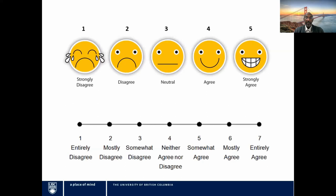Both scales have an odd number of categories, whether five or seven, and they are balanced around a neutral response. In the case of the five-point scale, we have two responses — agree and strongly agree — that are above neutral; these are favorable. We have two that are unfavorable, which are below neutral. In the case of the seven-point scale, we have three categories on both sides of neutral. The methods we will be talking about apply to this type of scale with an odd number of categories.